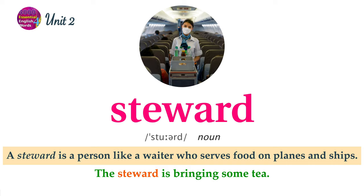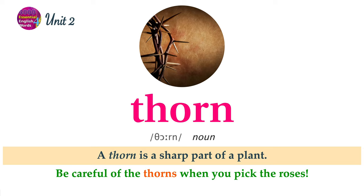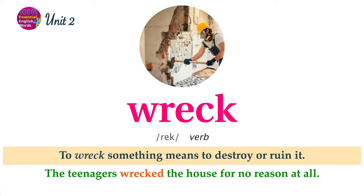A steward is a person like a waiter who serves food on planes and ships. The steward is bringing some tea. String is a thin piece of fabric or rope. I found a large ball of string. A thorn is a sharp part of a plant. Be careful of the thorns when you pick the roses. To wreck something means to destroy or ruin it. The teenagers wrecked the house for no reason at all.